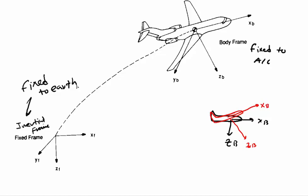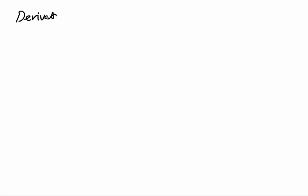We'll see another frame later called the navigation frame. For now, let's take the body frame and inertial frame and talk about the derivation of the equation of motion.